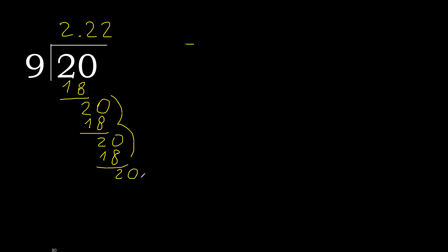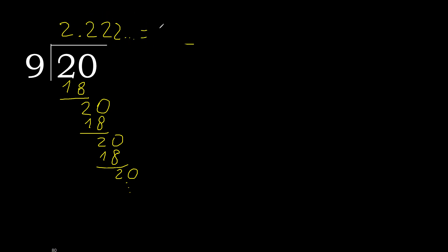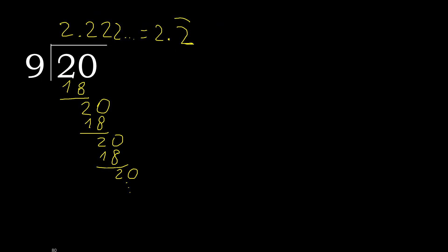It repeats — therefore repeat, repeat. After the point, it repeats like this, to repeat. So 20 divided by 9 is here — a repeating decimal.